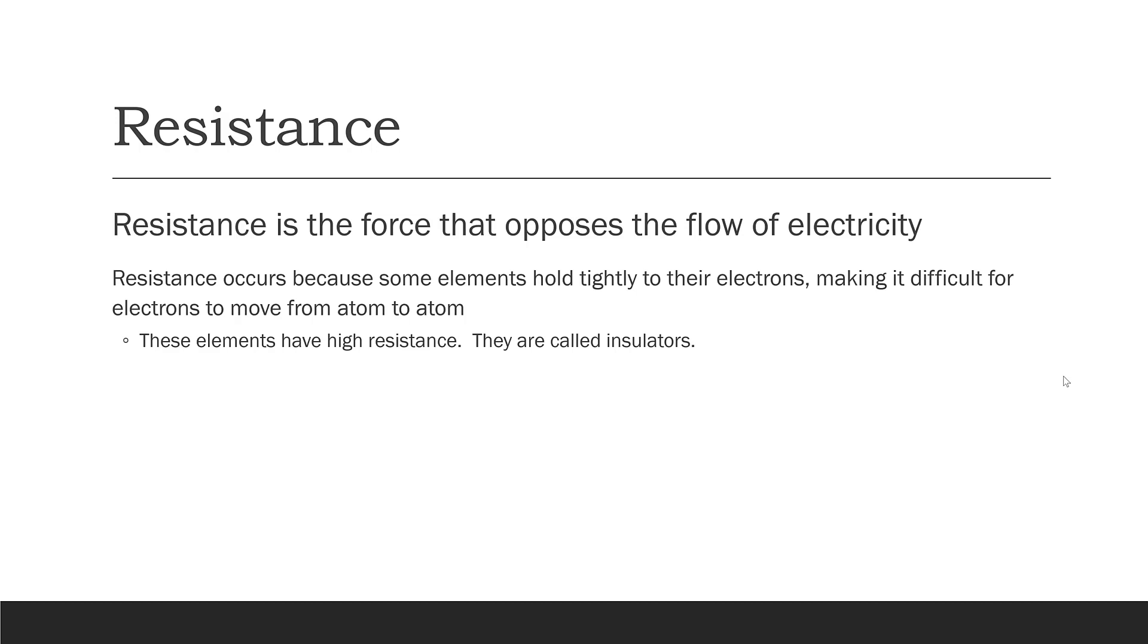Now, let's talk about resistance. Resistance is the force that opposes the flow of electricity. We said that electricity is electrons in motion, electrons moving from one atom to the next. Well, resistance occurs because some elements hold on tightly to their electrons, making it difficult for the electrons to move from atom to atom. These elements have high resistance, and these types of elements are called insulators.